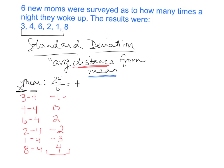The way statisticians solved this back in the day was to square all these values — multiply them by themselves — so everything becomes positive. Then they would find the average of the squares, and at the very end take the square root. Squaring each value: negative one times negative one gives positive one, zero times zero is zero, two times two is four, negative two times negative two is positive four, negative three times negative three is positive nine, and four times four is sixteen.